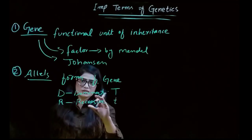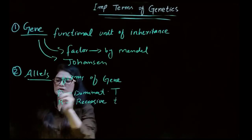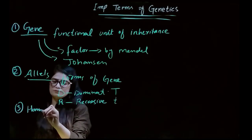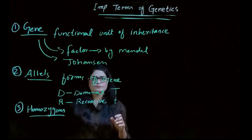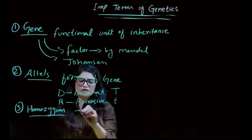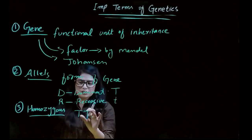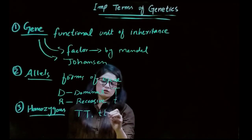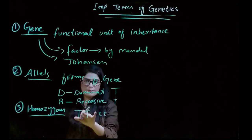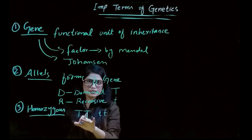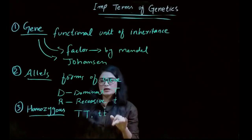The third term is homozygous. Homozygous means both genes are the same. For example, if we have both dominant genes — capital D, capital D — these are homozygous dominant. If we have both recessive — small t, small t — these are homozygous recessive.